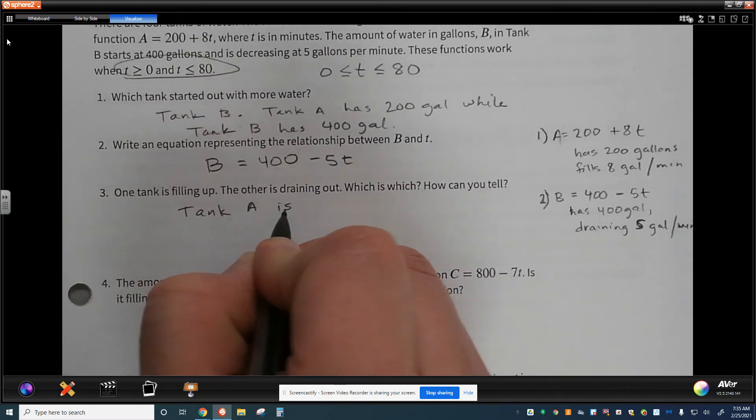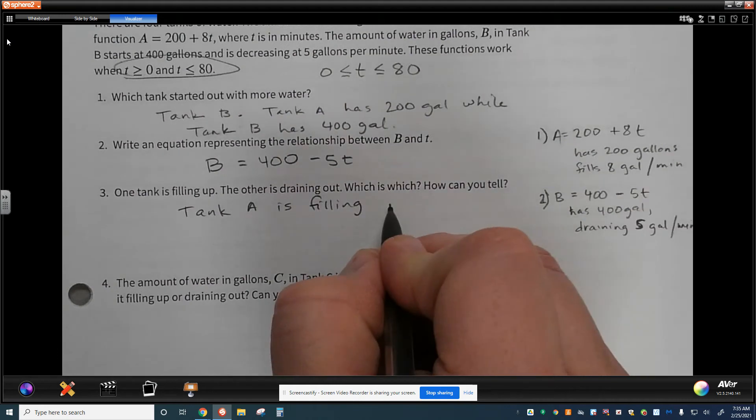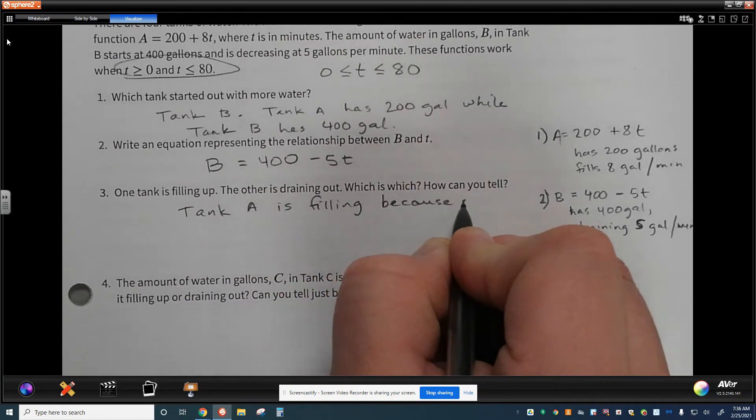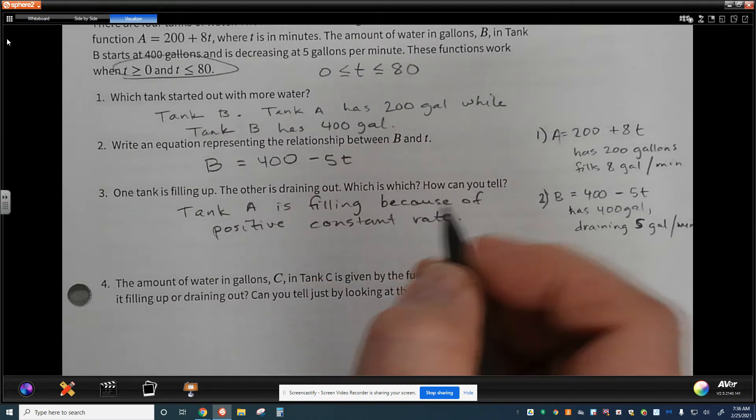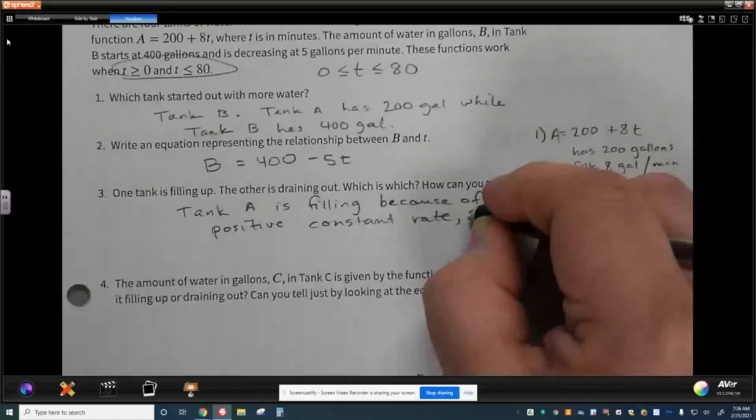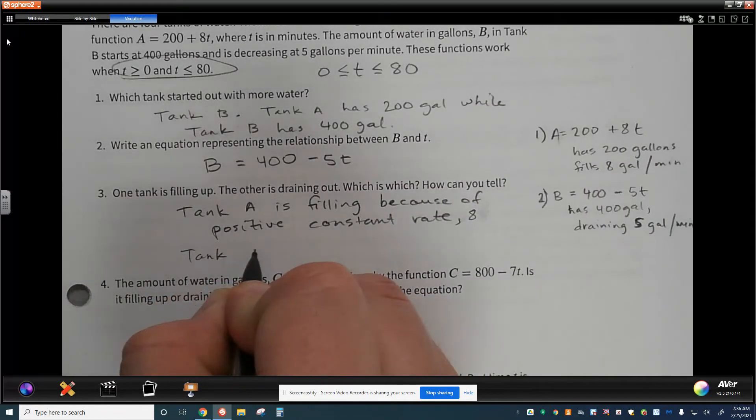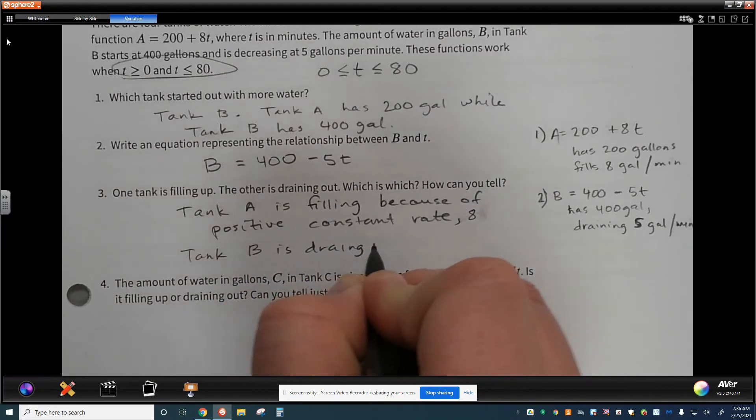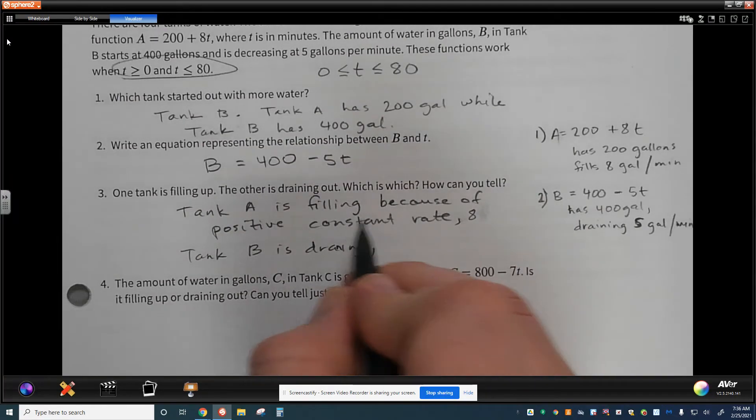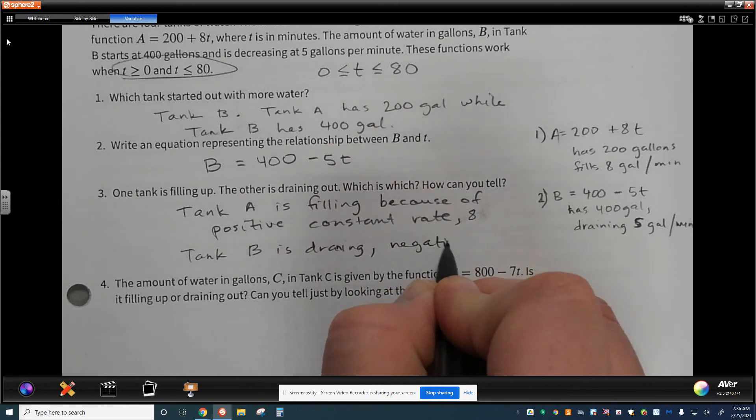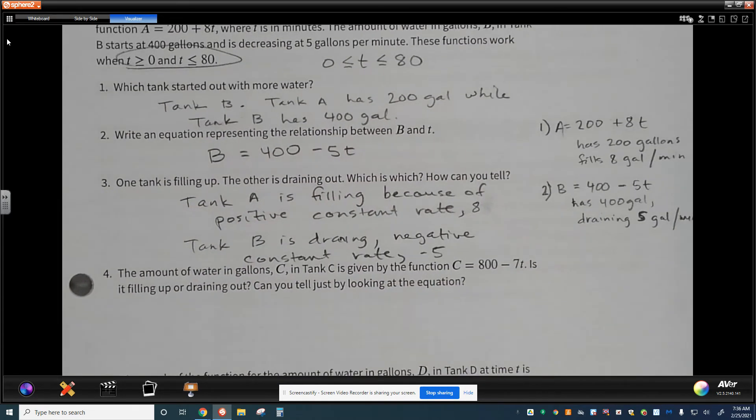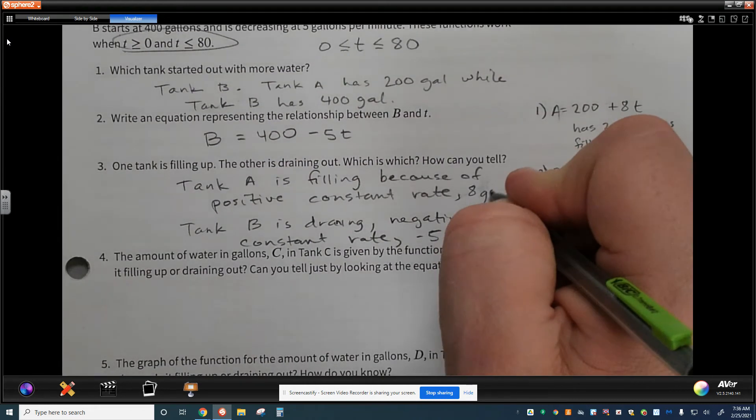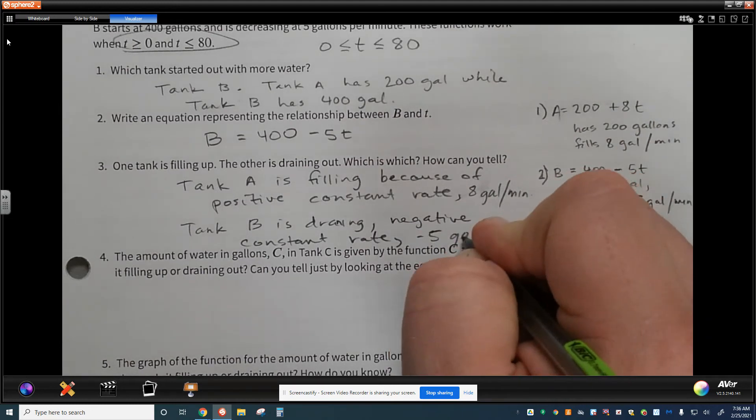Tank A is filling. And the reason we know is because it is a positive slope or a positive constant rate. And tank B is draining. And for the same reason, but it's just the opposite. We can see that it has a negative constant rate. There we go. I should probably put gallons per minute.